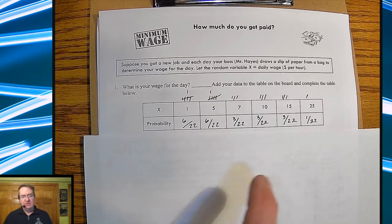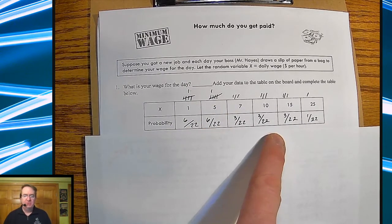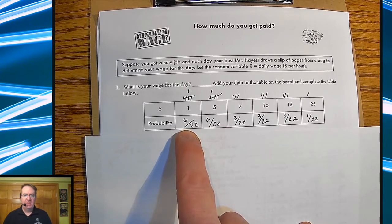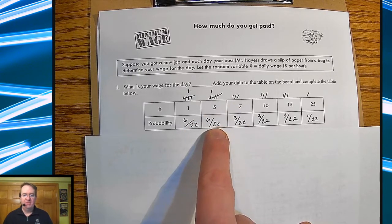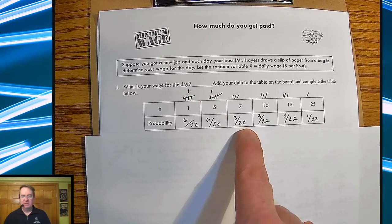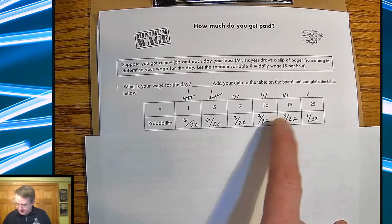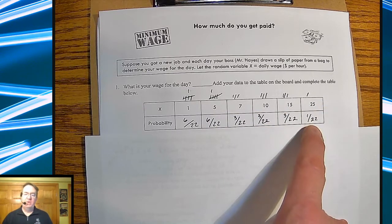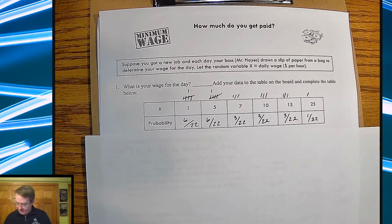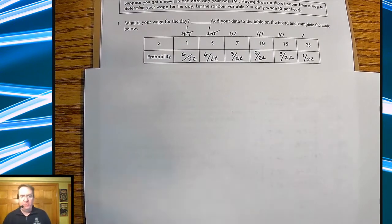In my class today, we just did this, we had 22 students. Six of them got paid $1 a day, six of them got paid $5 a day, three of them got paid $7 a day, three got paid $10 a day, three got paid $15 a day, and one of them got paid $25. And so you go through and you ask them to do a bunch of different things.